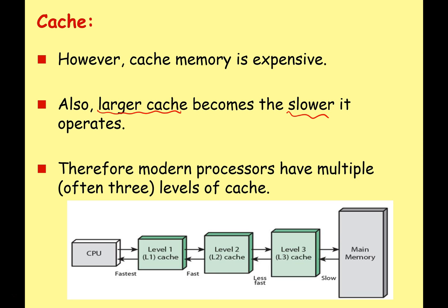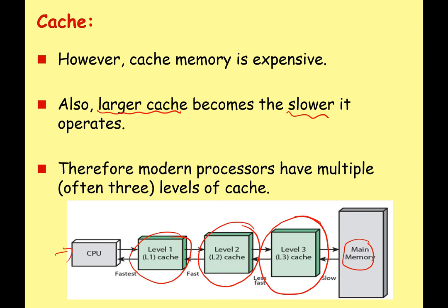You've also got the problem that larger cache becomes slower to operate. Therefore, on modern processors, we often have three levels of cache. You've got the CPU and the registers, and on that CPU we're going to have level one cache, which is really fast but quite small. Then we're going to have a much larger level three cache, which is much slower, and level two cache in the middle — a combination of speed and size. And of course we also have our main memory as well. The idea is you want to keep the instructions and data you're using frequently in the fastest cache, then gradually move things down through the caches, and when you're not going to need something for a while, put it back in memory. When something from memory is required, you move it up through the levels of cache so it's in the level one cache, ready to be sent to the CPU to be processed.